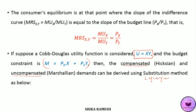Initially we'll see how the Hicksian and Marshallian demand functions are derived using the substitution method. We have our objective utility function, which is maximizing u is equal to xy, subject to the budget constraint.